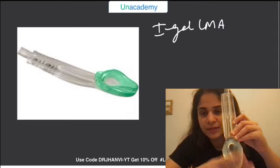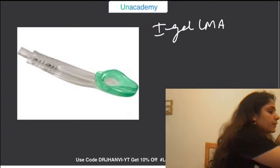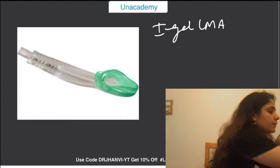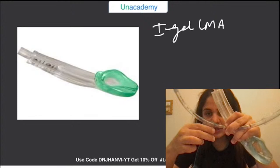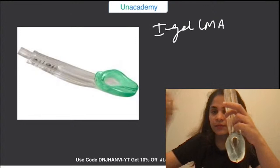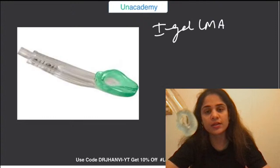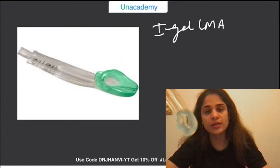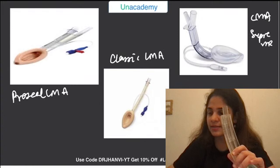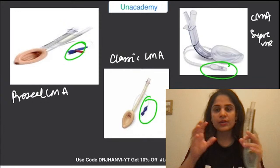This is the cuff of the LMA, which helps in ventilating the patient. Just like the endotracheal tube has a pilot inflation line, pilot balloon, and cuff, similarly an LMA also has a pilot inflation line and pilot balloon to inflate the cuff. This is a cuffless LMA, so you can inflate the cuff using air by attaching it to the pilot balloon.